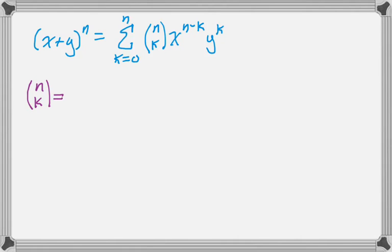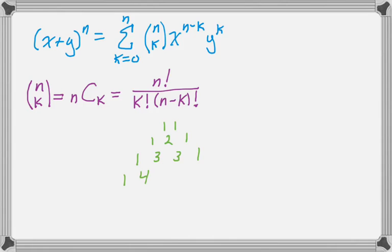And then n choose k, you might be more familiar with this notation, and that you could find using this formula. But what's really nice is when you're doing a binomial expansion, you always need n choose 0 all the way up to n choose n, which means you can pull those values off of Pascal's triangle.